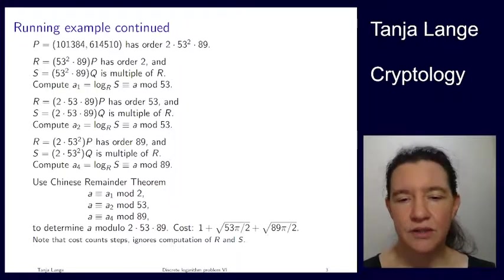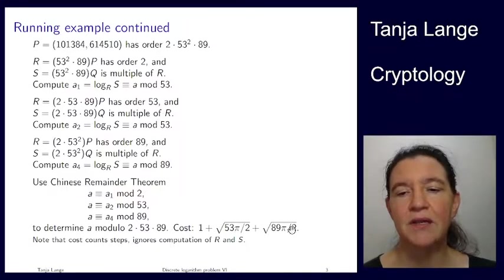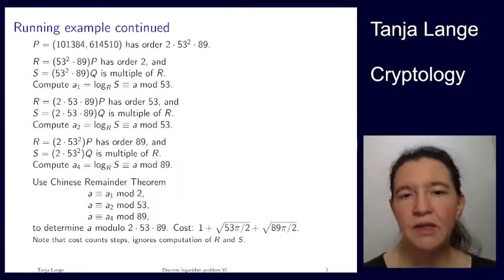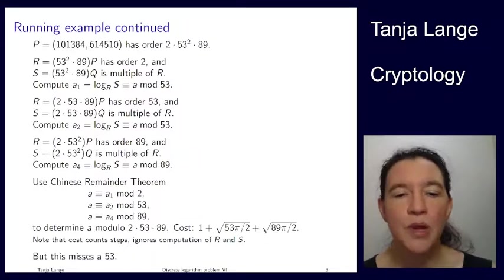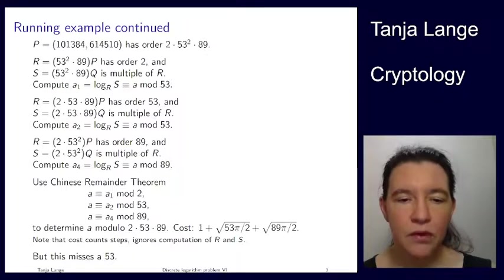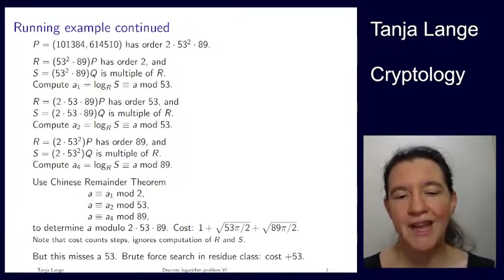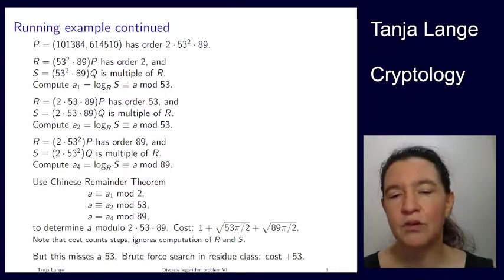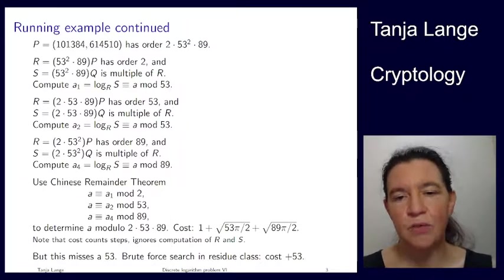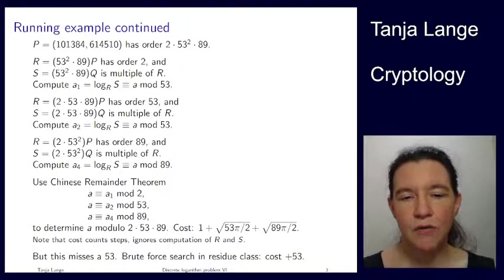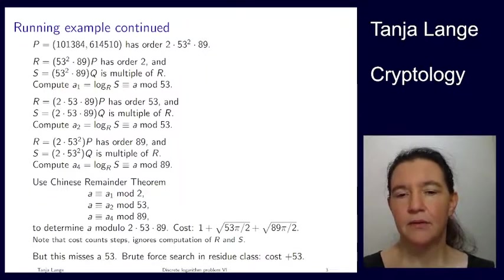That's a large chunk of what a is, but it's not all of a, because a is a number modulo the order of P. We're missing a factor of 53. Also, I should highlight that in the costs here, well, I'm putting the cost 1 for the discrete log mod 2, then we have this cost for the subgroup of order 53, subgroup of the cost of 89. I'm totally ignoring the scalar multiplication for getting the R and S. We're getting 3 × 2 scalar multiplications here as well. And, as I was already highlighting, we are missing a 53. Now, if you know that your a is this number modulo the group order divided by 53, you only have 53 choices. So we can take this number and then do brute force trials and see, well, does this a work? Does this a work? Each time just costs you a scalar multiplication. So the overall cost to get a would be the cost that we have here, plus 53 for the brute force search.